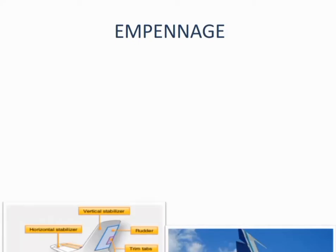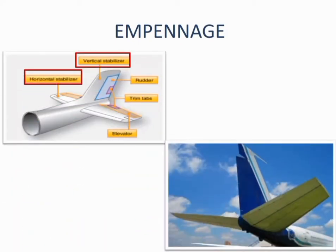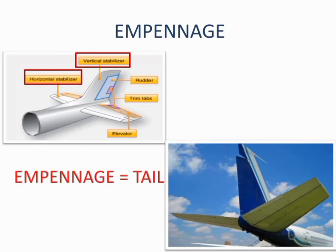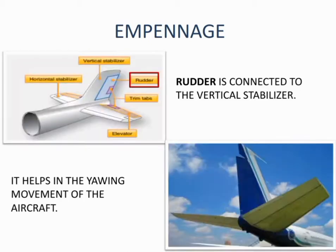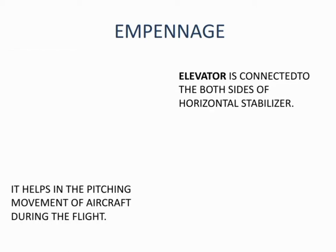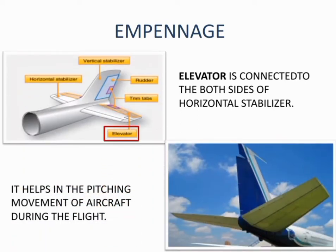The empennage is the tail of the aircraft. It has two components: the vertical stabilizer and the horizontal stabilizer. The rudder is connected to the vertical stabilizer and helps in the yawing movement of the aircraft. The elevator is connected to both sides of the horizontal stabilizer, as highlighted in the pictures, and it helps in the pitching movement of the aircraft during flight.